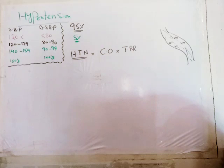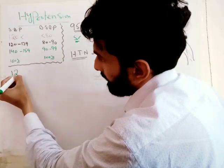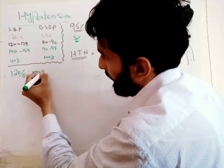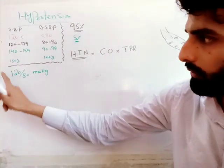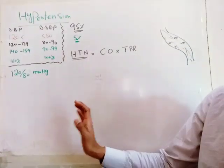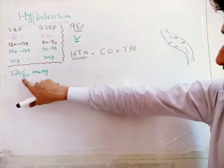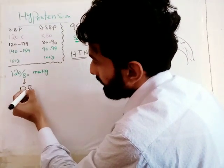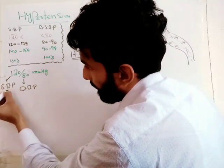Blood pressure is basically written in this form: 120 over 80 mmHg. It's not one figure — there are two figures, 120 and 80. It's not a range, like blood pressure should be from 80 to 120. The lower 80 indicates diastolic blood pressure and the 120 indicates systolic blood pressure.